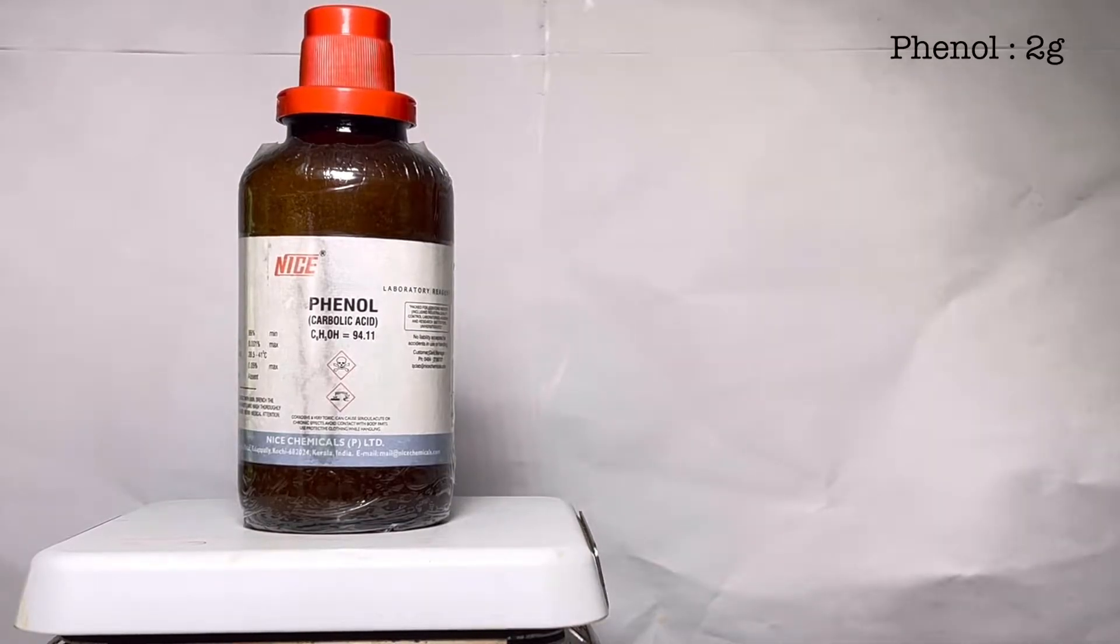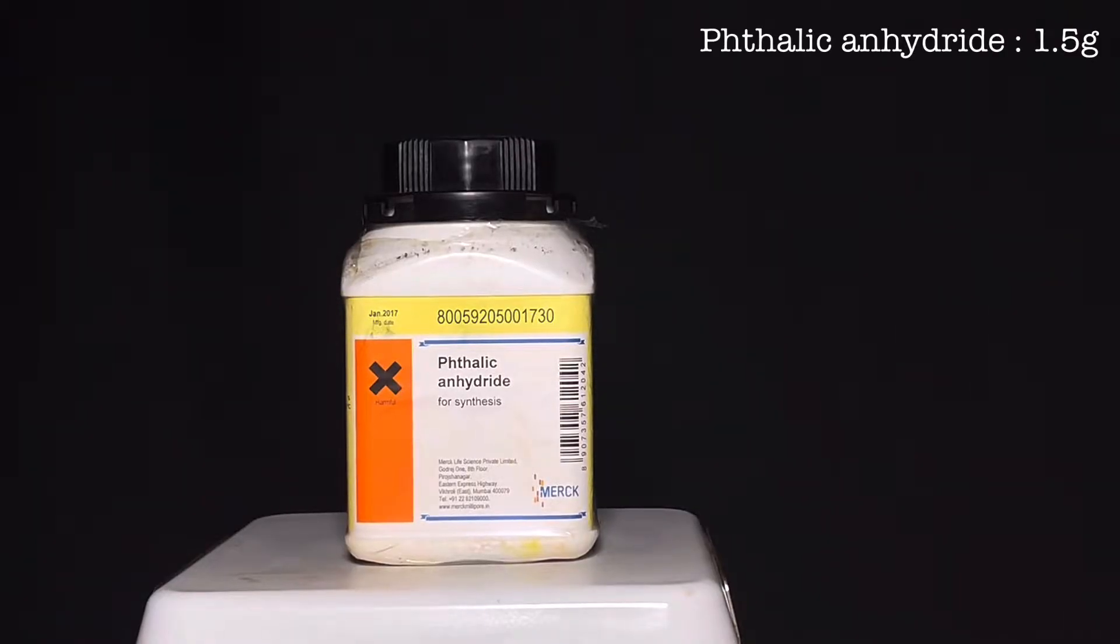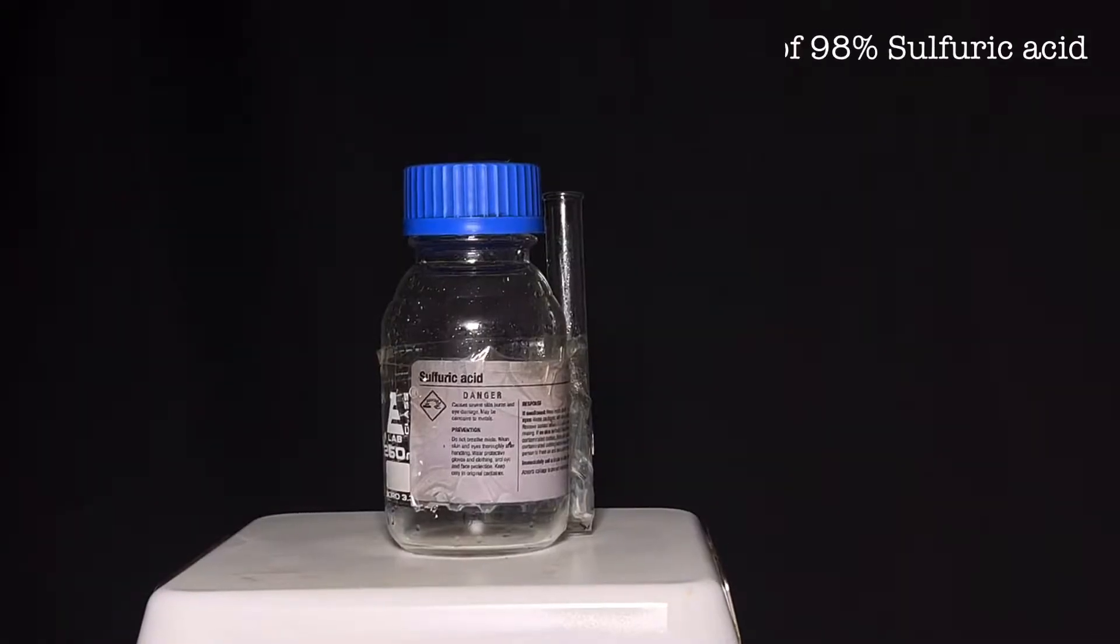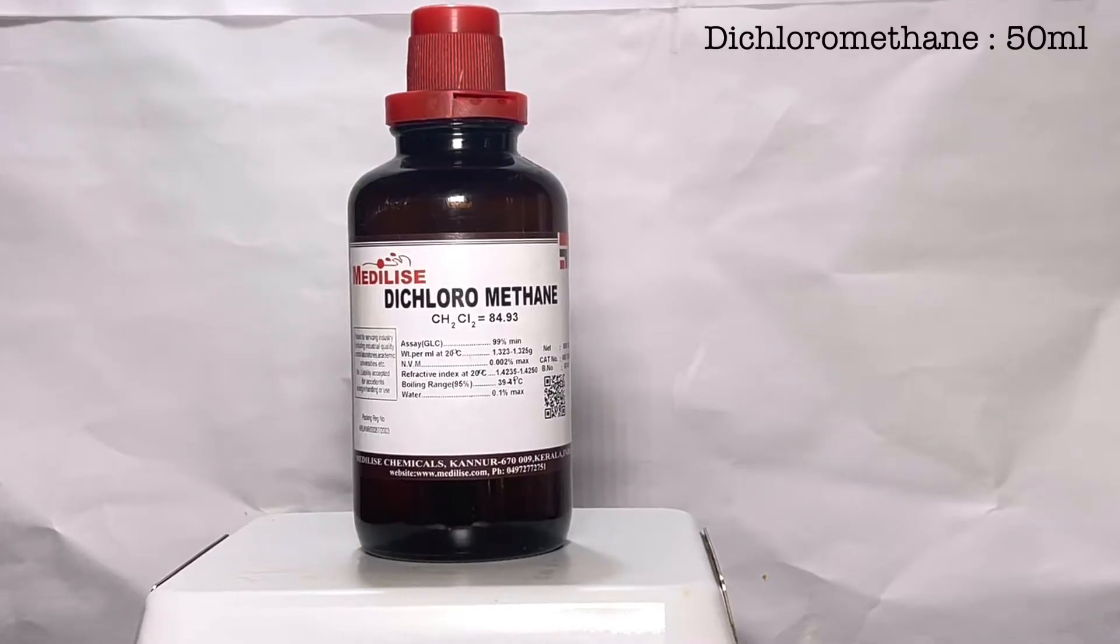For this synthesis we will need 2 grams of phenol, 1.5 grams of phthalic anhydride, few drops of 98% sulfuric acid, and 50 ml of DCM or dichloromethane for extraction.